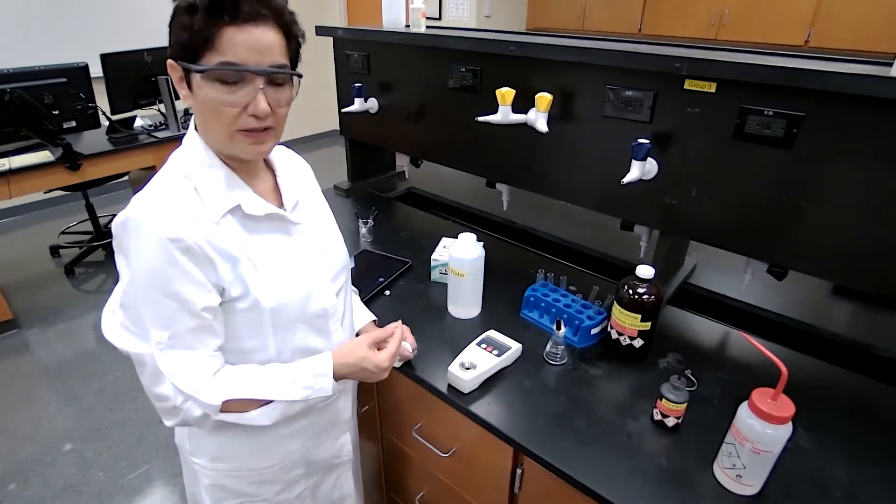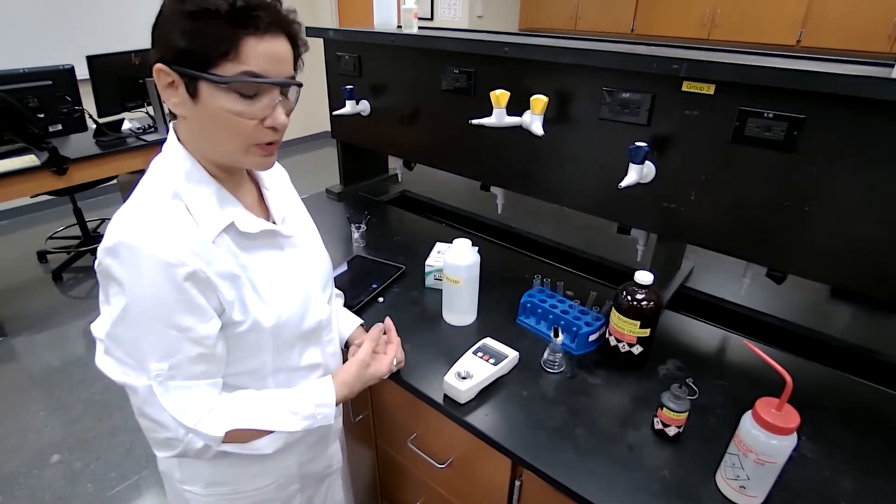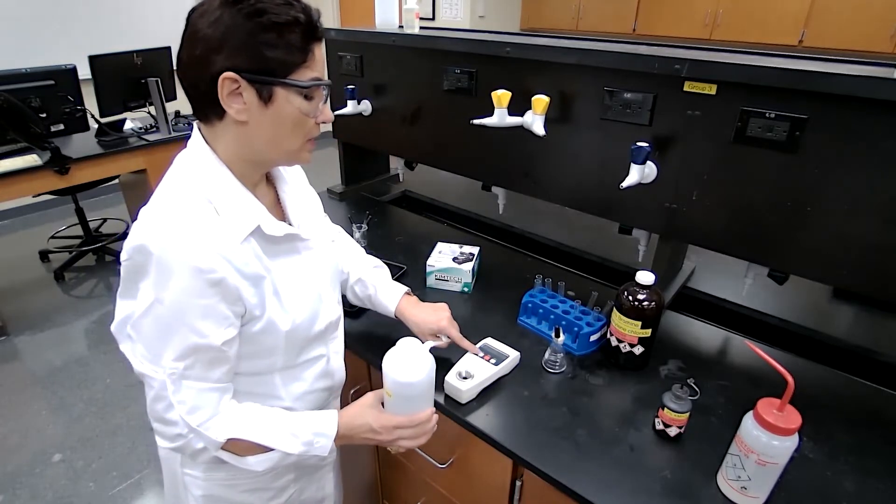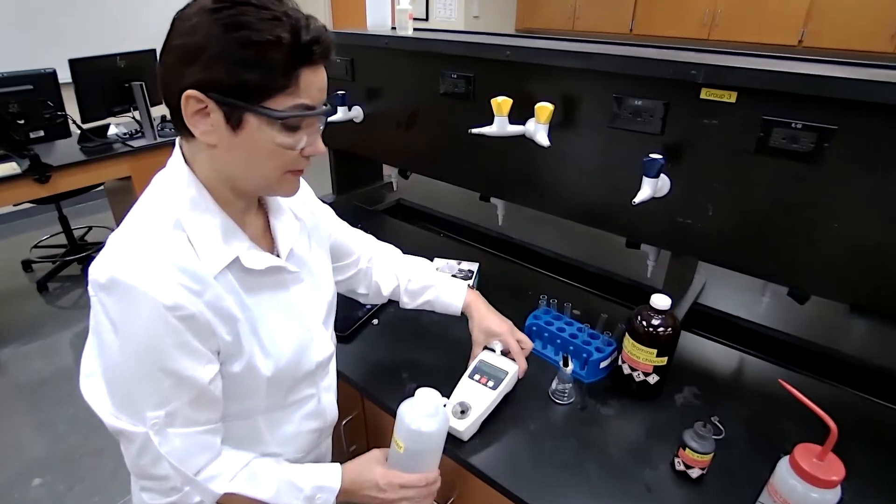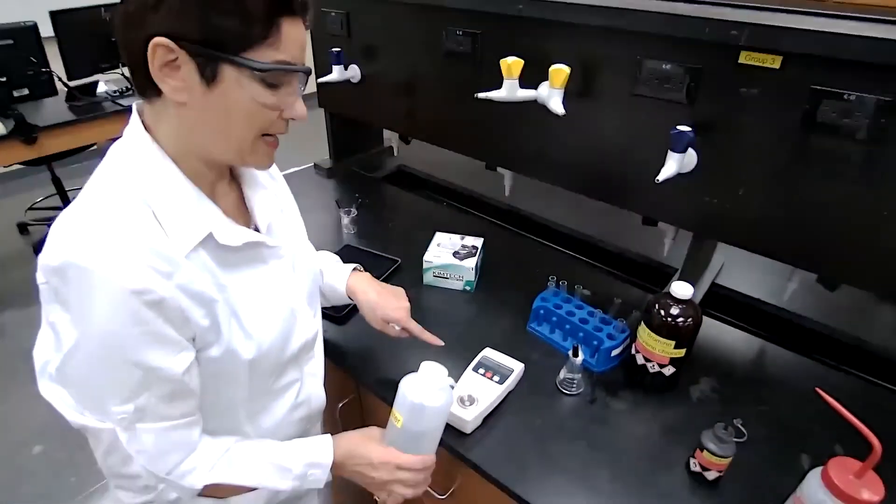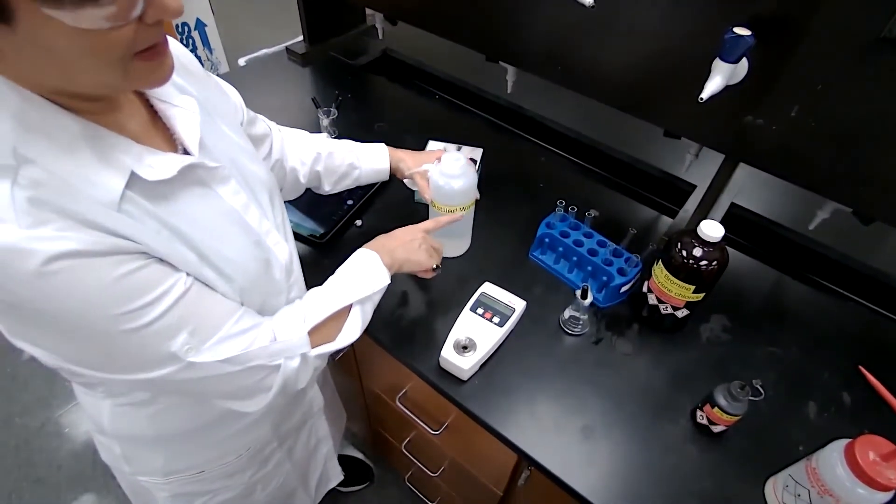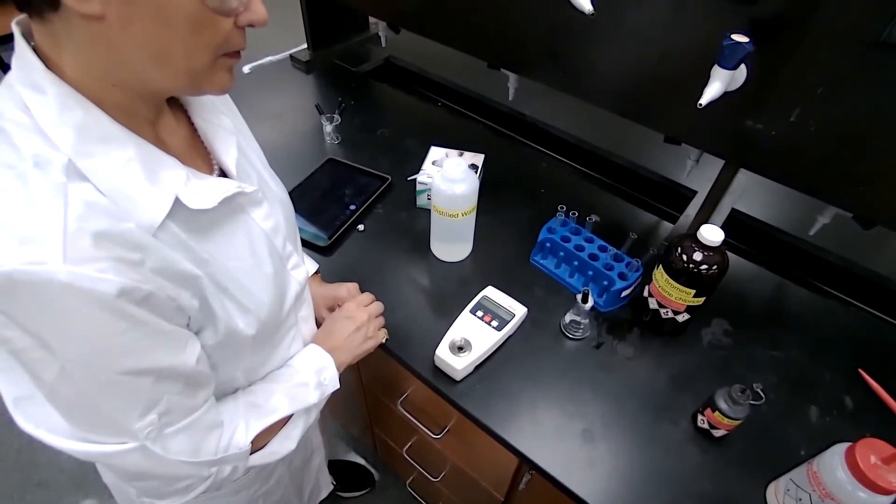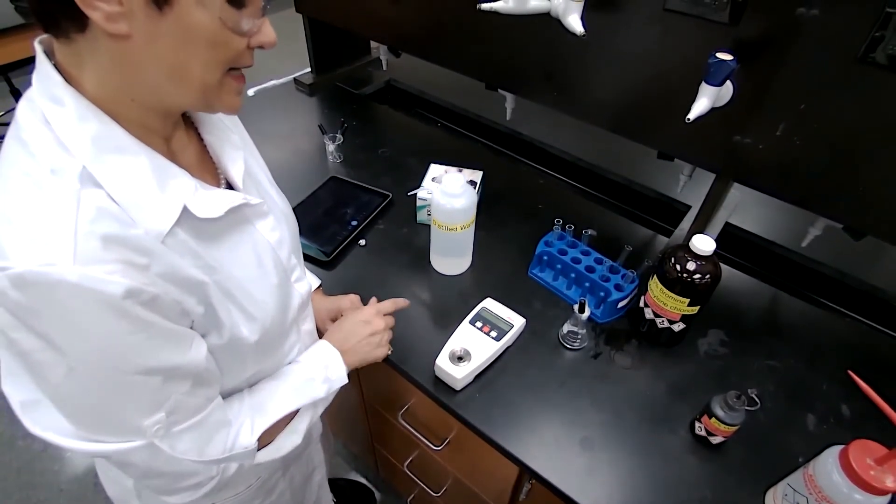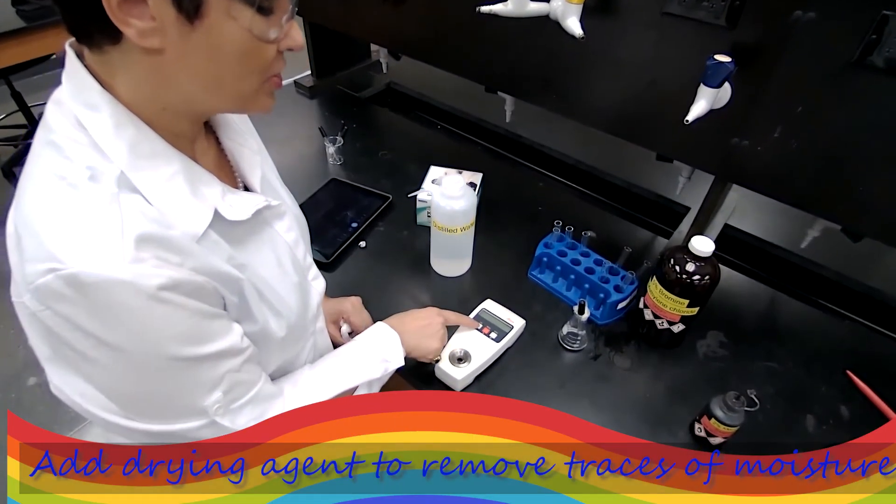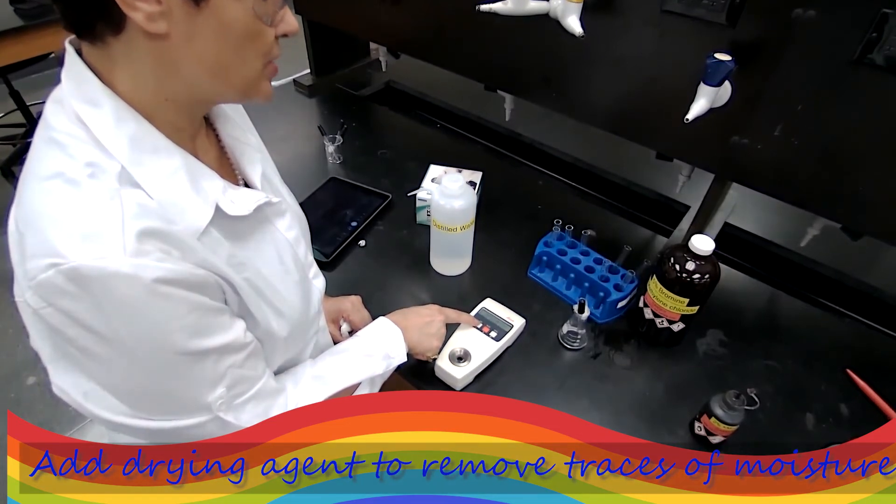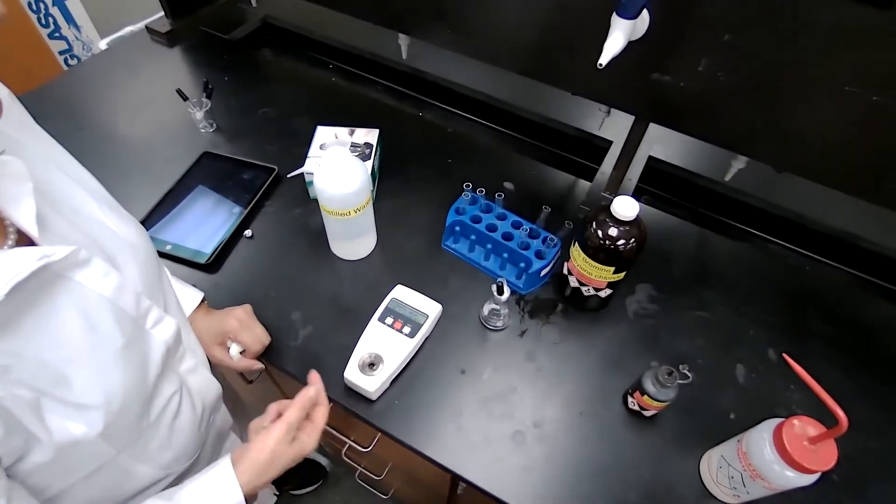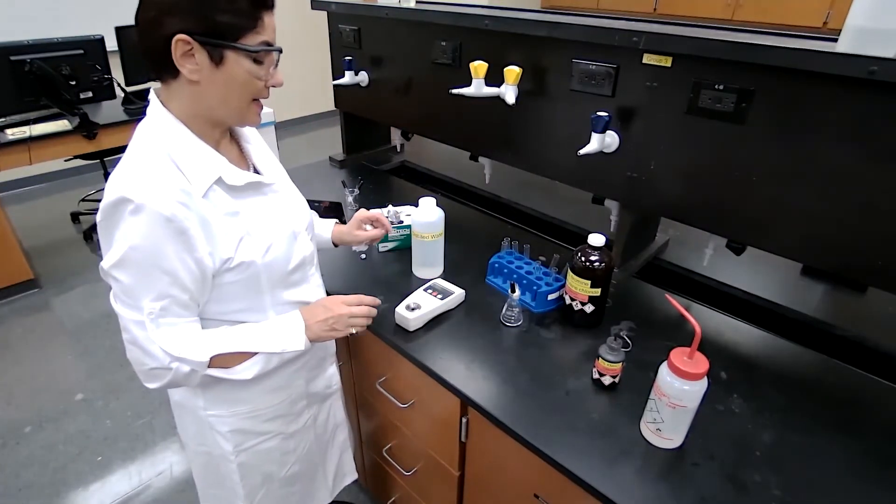The last test, which is called a physical property compared to the other two that were chemical tests, is measuring the refractive index of the product. First we need to calibrate our refractometer. This is a digital refractometer. When we press cal, it's asking to add distilled water. We add the distilled water. It's going to read the distilled water as a standard. As soon as it gives us the okay, that calibration has been complete, calibration success.